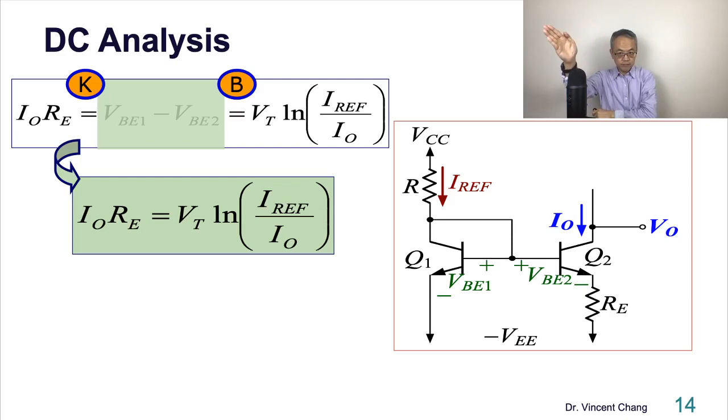How are you going to solve this? IO on the left hand side, linear term. On the right hand side, inside, natural log. So the only way to solve this is to try and error. You can also solve this by computer. But if you do the hand analysis, you have to try and error.